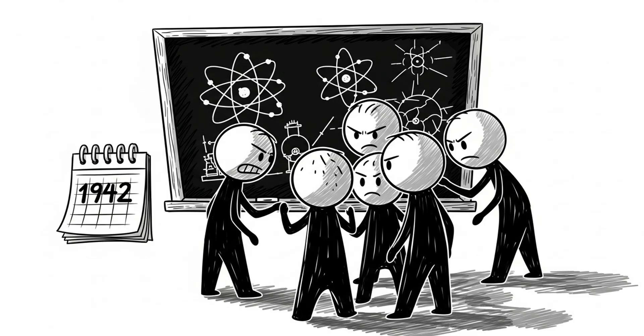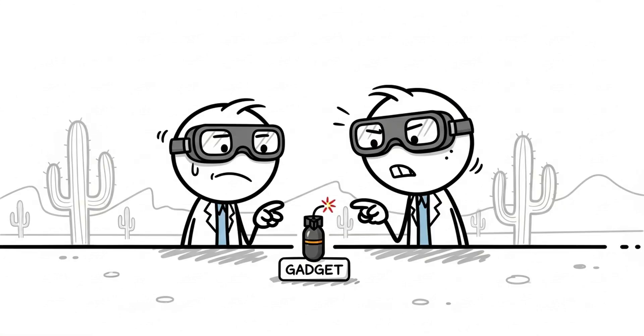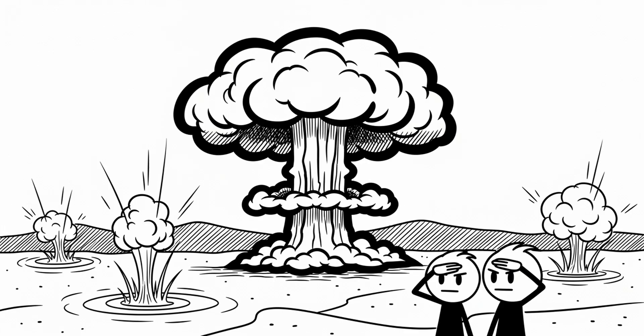It began in secrecy. A wartime race to split the atom. The Manhattan Project, born from fear that Nazi Germany might create the ultimate weapon first. Thousands of scientists, technicians, and workers. Three secret cities. Billions in funding. But hardly anyone knew the full picture. By July 1945, it was ready. A bomb. More powerful than anything in human history. The test was called Trinity. It worked. And it changed the world.